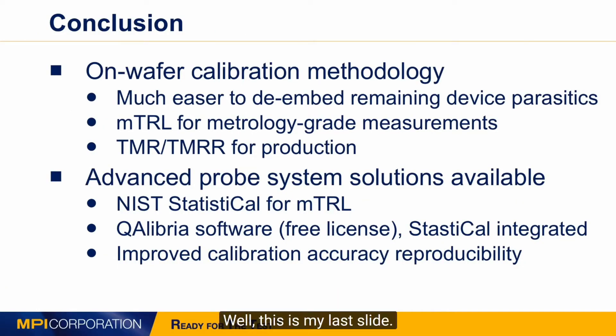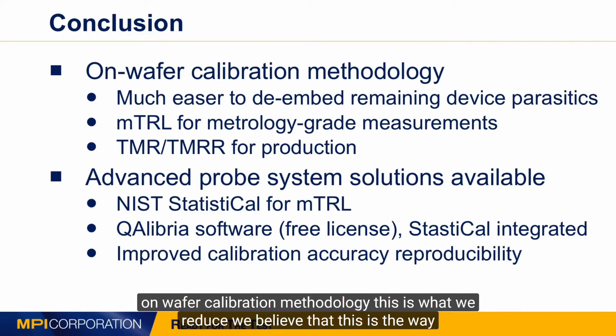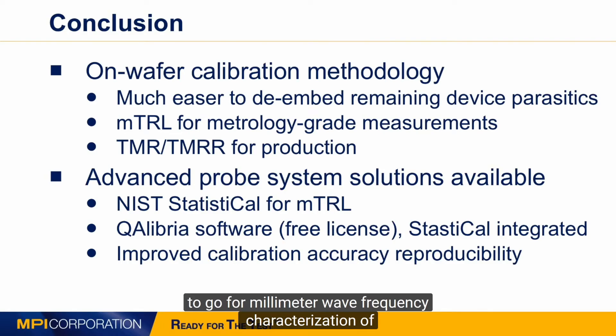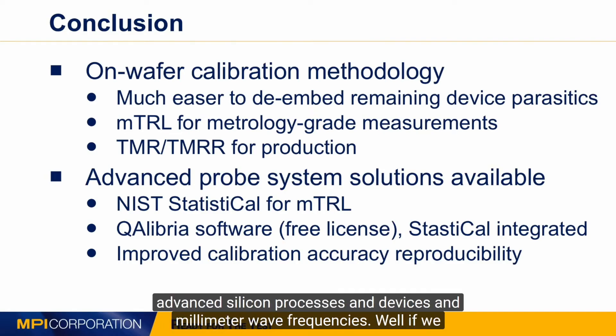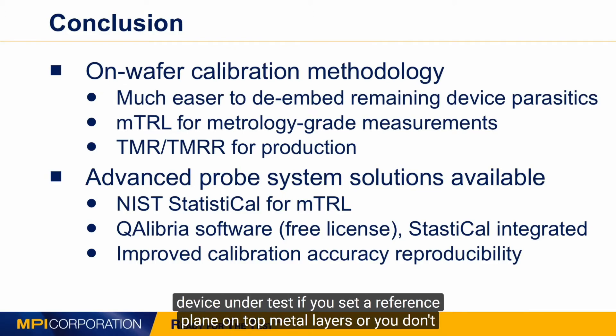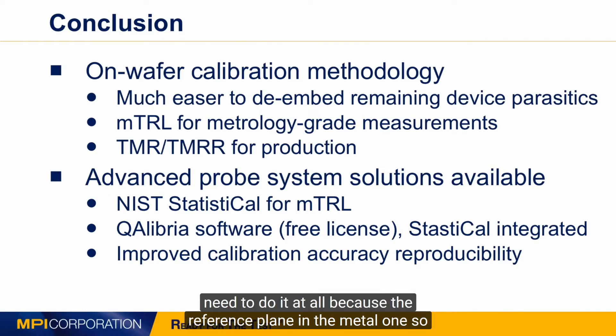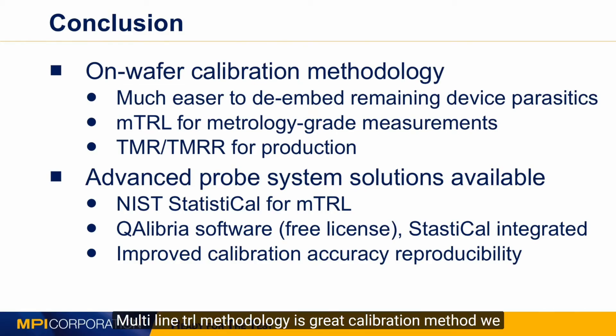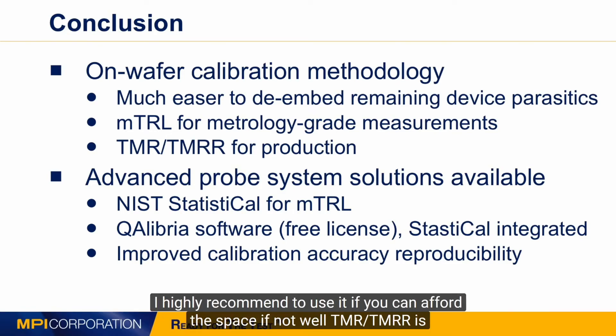That's my last slide. To conclude, on the topic of calibration methodology, we believe multi-line TRL is the way to go for millimeter-wave characterization of advanced silicon processes and devices. It makes it much easier to de-embed the remaining parasitics of the device under test — whether you set a reference plane on the top metal layers or on metal one. Multi-line TRL is a methodology-grade calibration method and we highly recommend using it if you can afford the space.